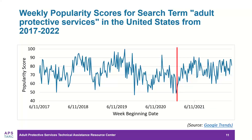This Google Trends graph shows the weekly popularity scores for the search term 'Adult Protective Services' from 2017 to 2022. There have been times prior to 2022 where the score was higher than it's been this year, but after the red line you'll notice there's been no time where the score dipped below 60. It may not demonstrate a sharp increase, but it does demonstrate a more sustained high score for Google searches on Adult Protective Services.